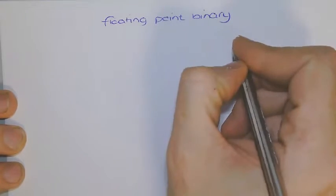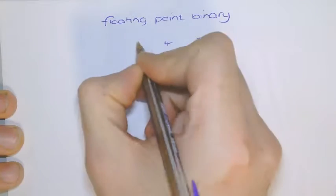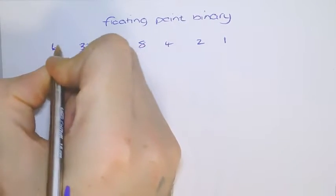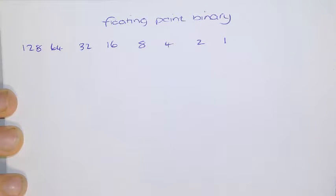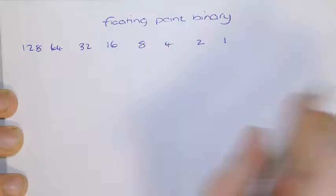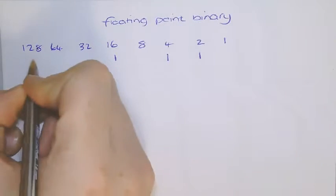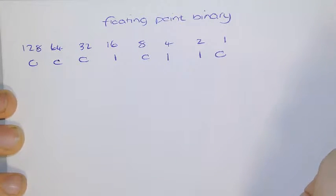Previously with binary, you would have learned to do simple conversions by going 1, 2, 4, 8, 16, 32, 64, and 128. That's just a standard number. So if I needed to make number 22, I would turn 16, 4, and 2 on, and the rest would be left blank.